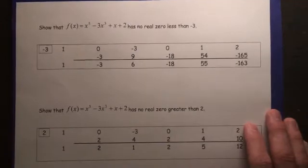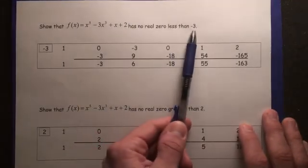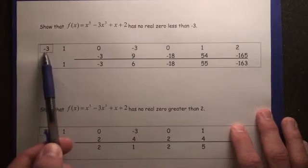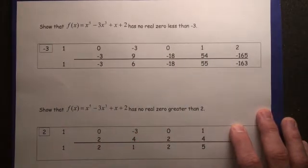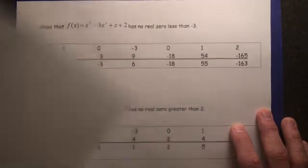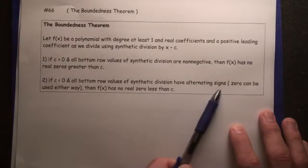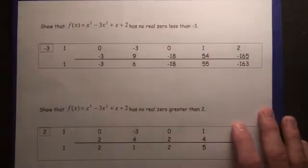So here we go, here's an example. Show that f(x) has no real zeros less than negative 3, so we put the negative number in the box, and we do synthetic division. We're looking for alternating signs, and that's exactly what we get.